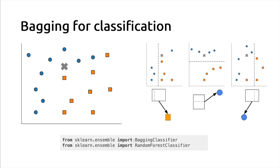In scikit-learn, you can use either BaggingClassifier, which is a generic bagging strategy that can work for any kind of base classifier, or a specialized variant called random forest, where the base model is a decision tree. For example, you could use a BaggingClassifier for logistic regression, replacing all the trees with individual logistic regression models. I will explain what random forest does more specifically a bit later.